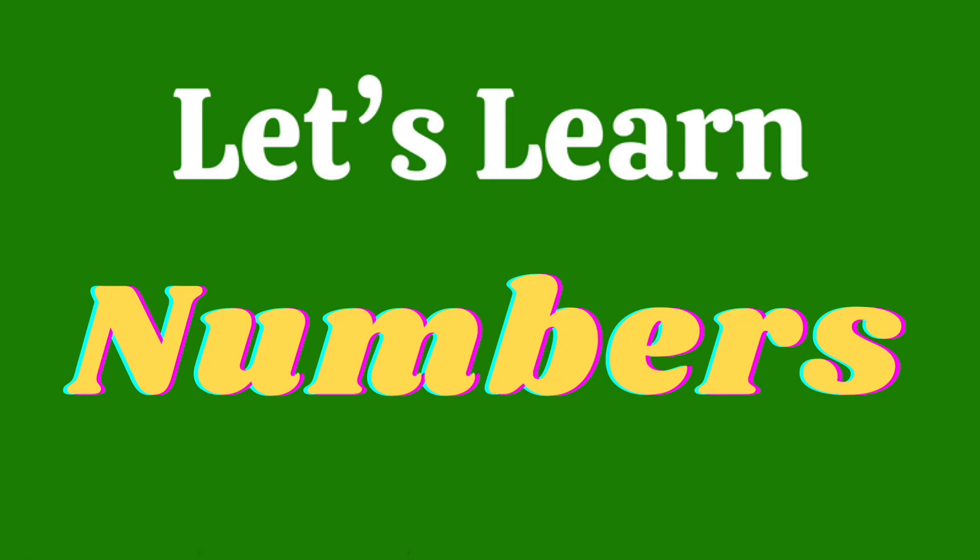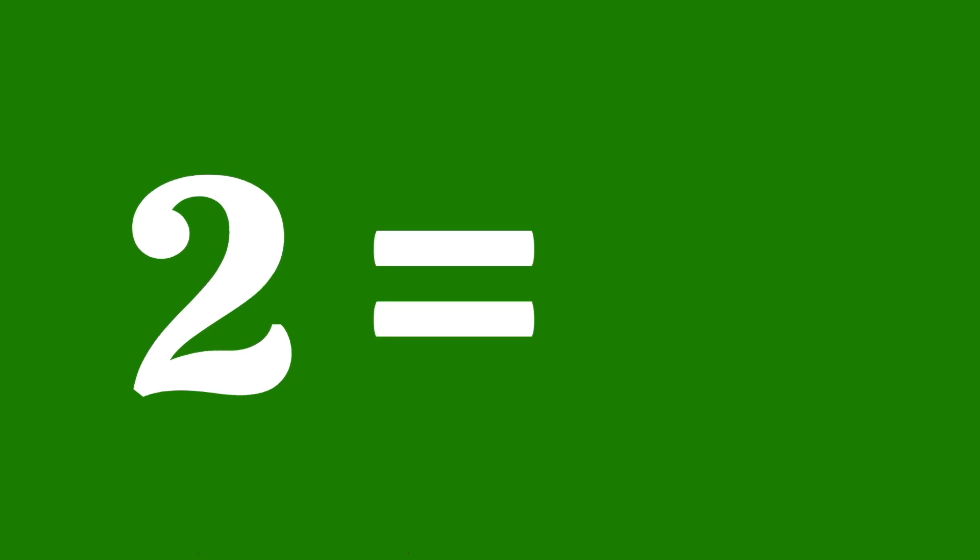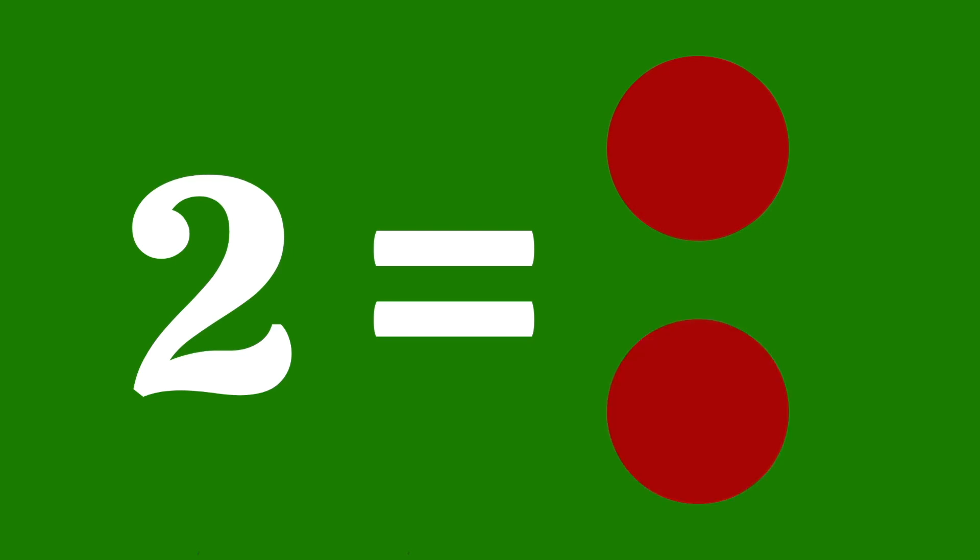Let's learn numbers: one, two, three, four, five, six, seven, eight, nine, ten. Let's count one circle — one is equal to one circle. Let's count two circles — two is equal to one, two circles.